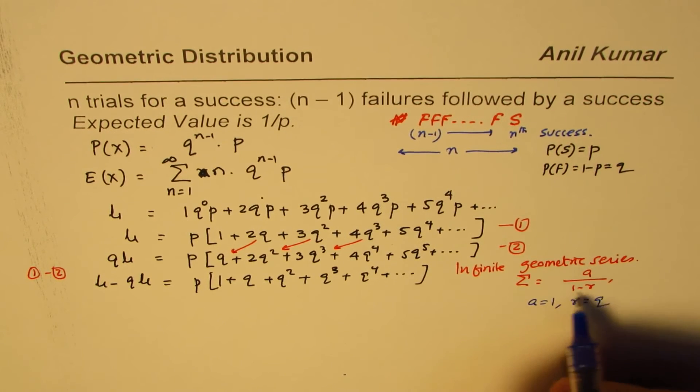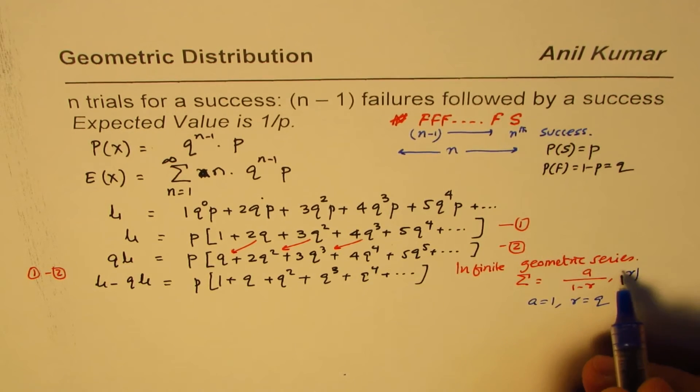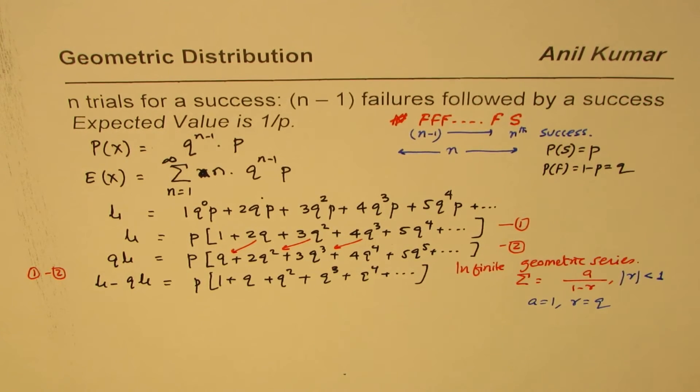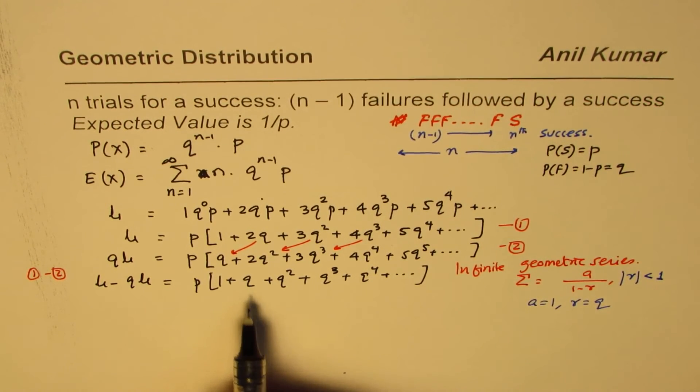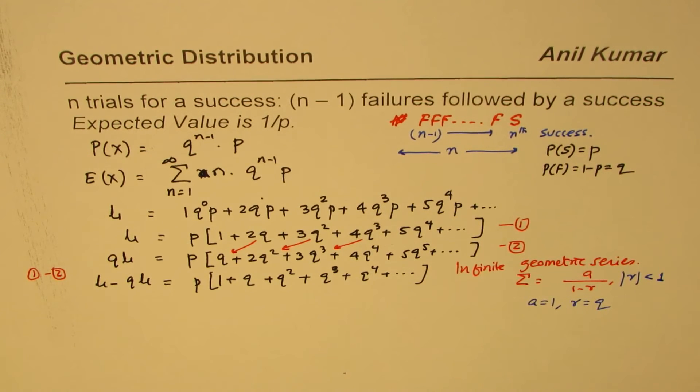Now, this sum converges when the absolute value of r is less than 1. Q is less than 1, since the sum of P and Q is 1. So Q has to be less than 1.